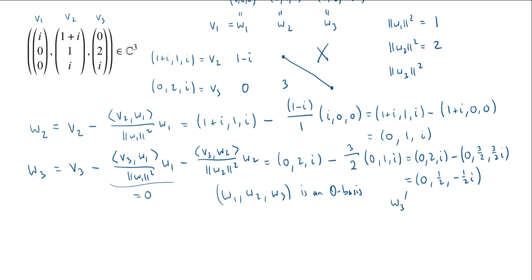I'm going to make a W3 prime, because we're normalizing anyway. When you normalize, you multiply by a constant. I'll just multiply by 2. So W3 prime will be twice W3, which is 0, 1, negative i. I'm going to replace W3 with W3 prime. W3 prime is much easier to compute the square of the norm for. That's 1 plus 1, which is 2.